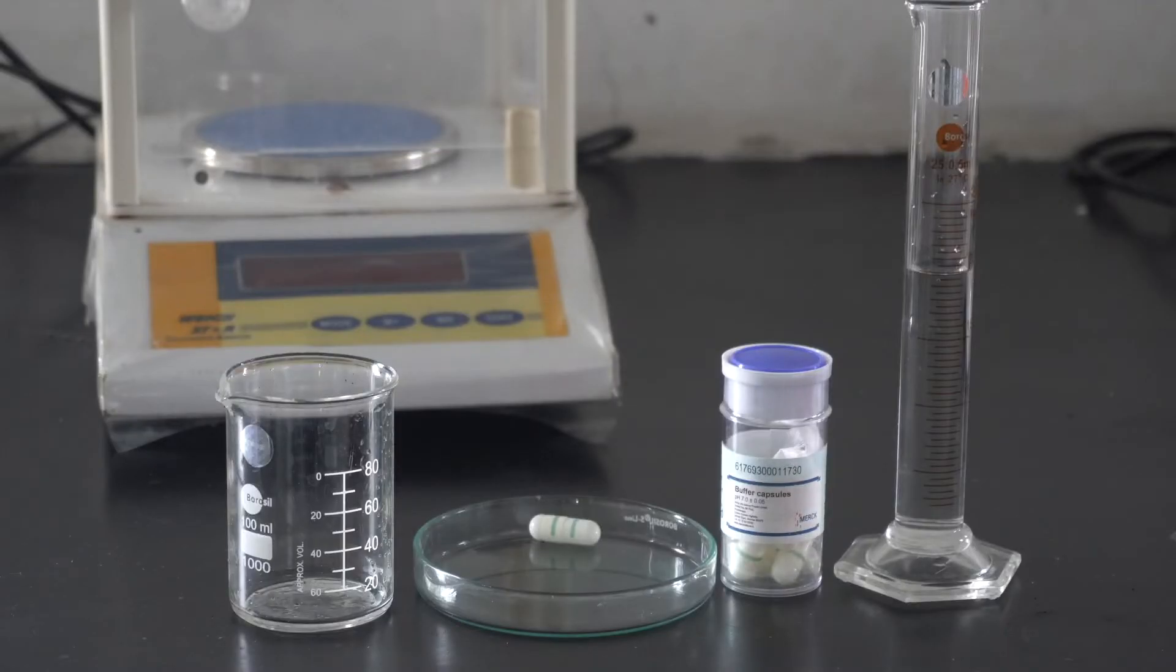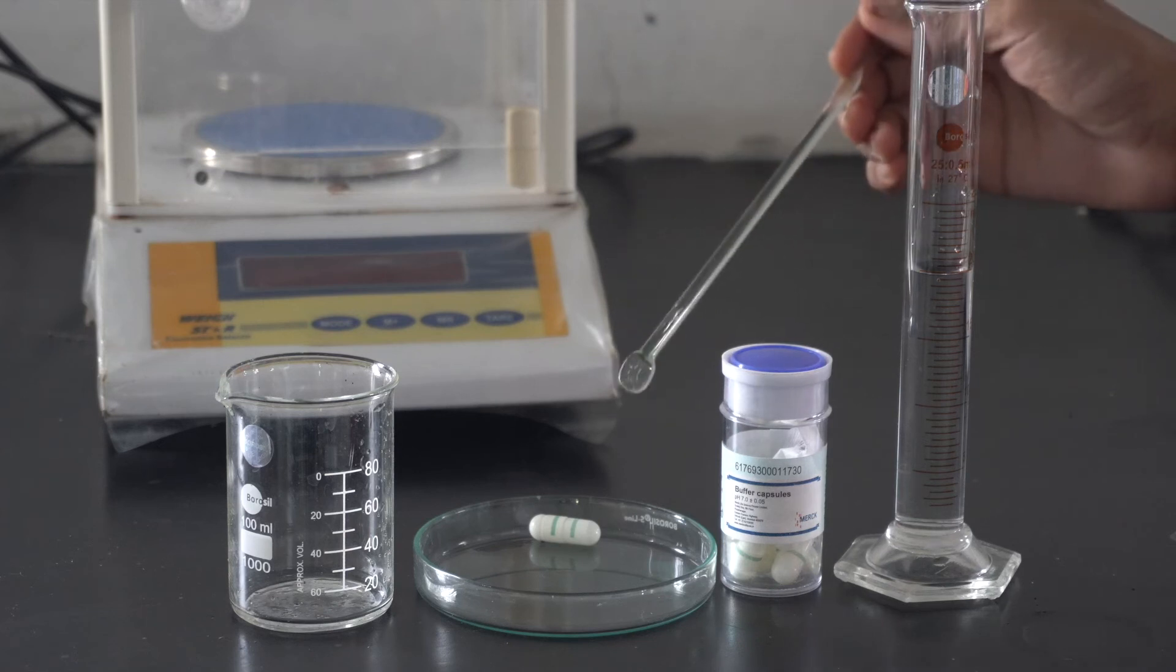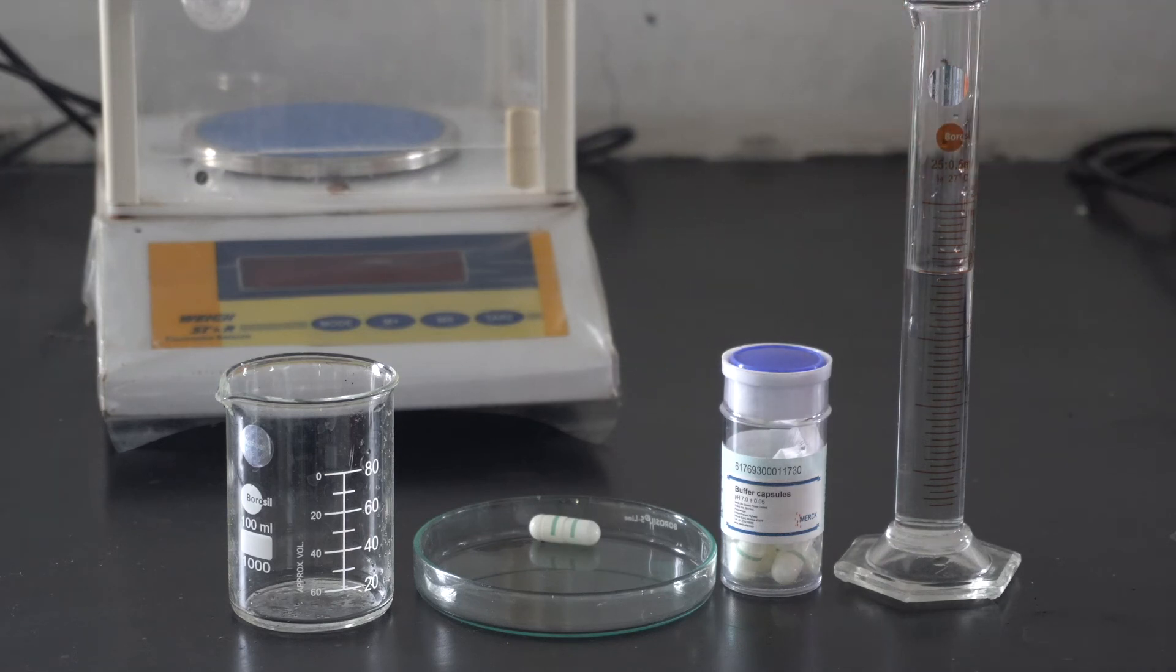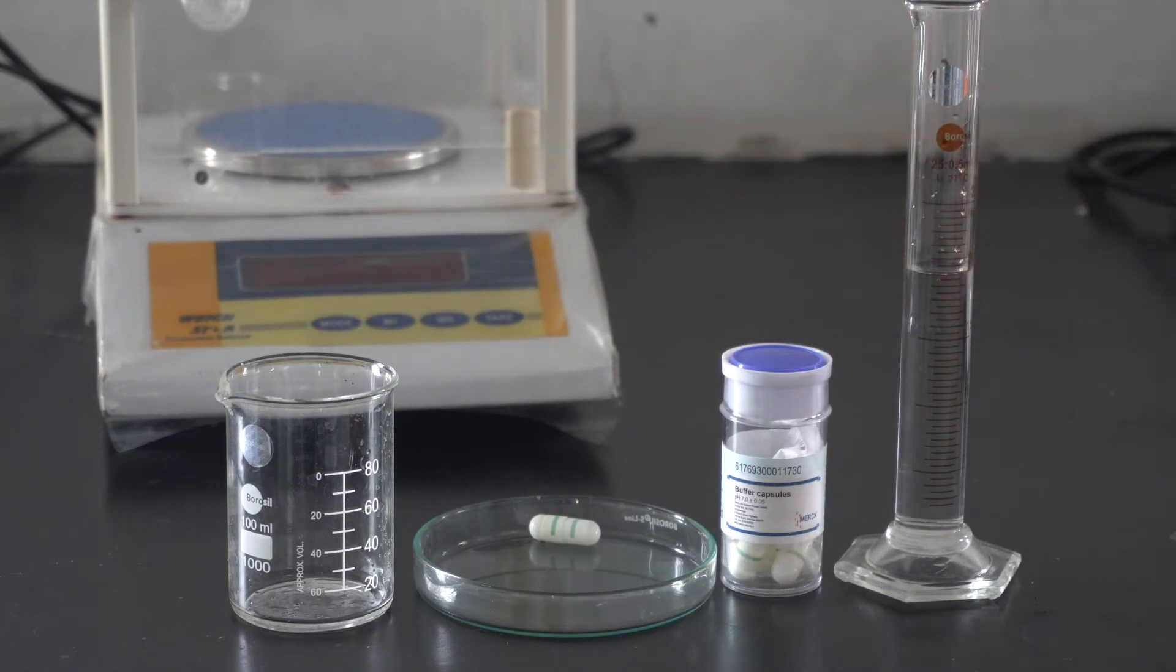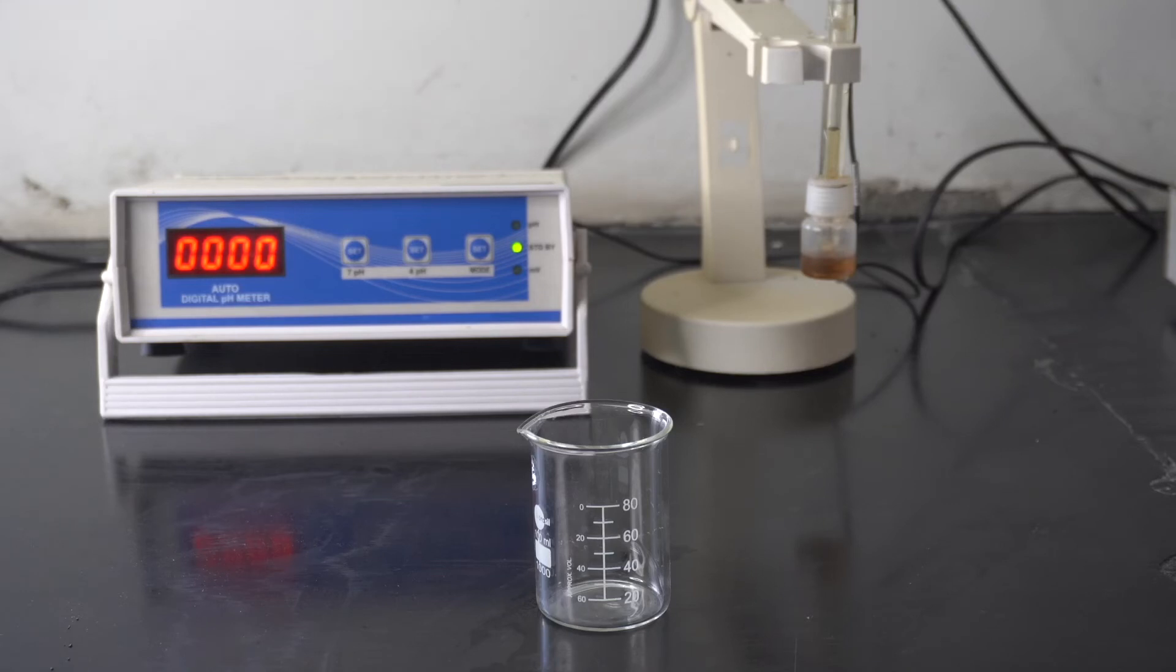For calibration purposes with pH 7, we will require a buffer capsule, 20 ml distilled water, 20 ml of mixture, and a beaker. Now we are performing a calibration with a pH 7 buffer solution. Generally, a two-point calibration with pH 7 and pH 10 buffer solution is recommended.